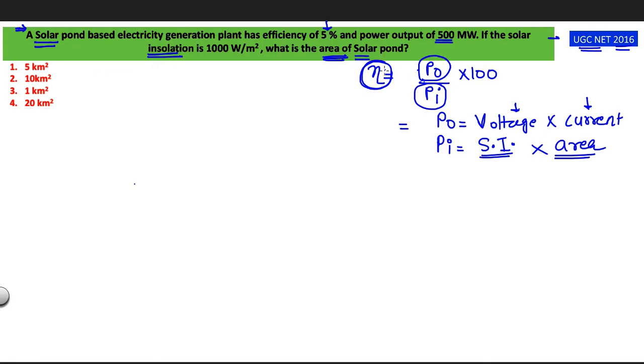Now while using this formula, some students get confused because percent is given here. So what do they do? They write 5% like this and then they remove the percent sign from here and add 100 here. At the same time what do they do?